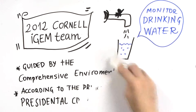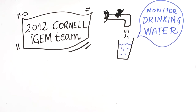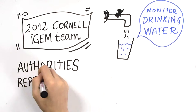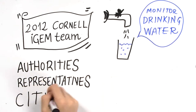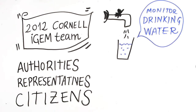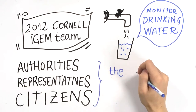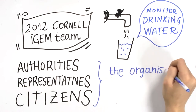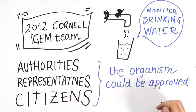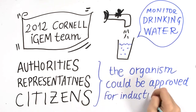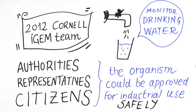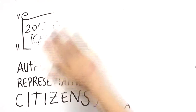The Cornell iGEM team involved citizens, authorities, as well as representatives of various ethical committees in order to discuss and confirm that the synthetically engineered organism could be approved for industrial use without harming natural ecology and biodiversity or having negative impacts on humanity.